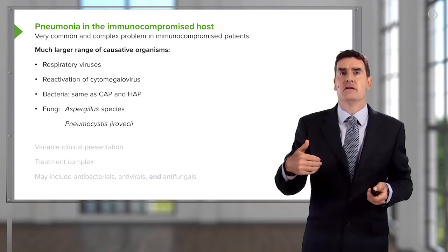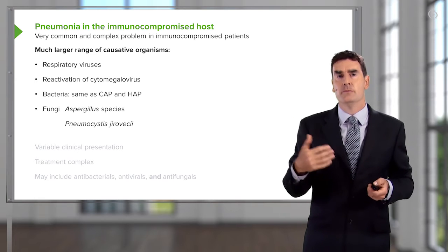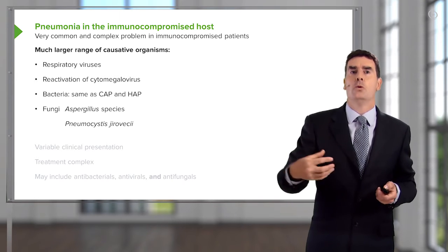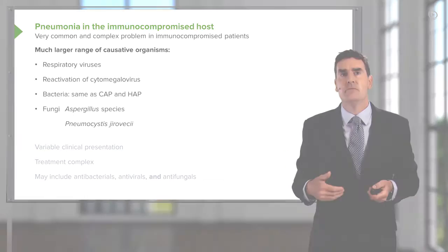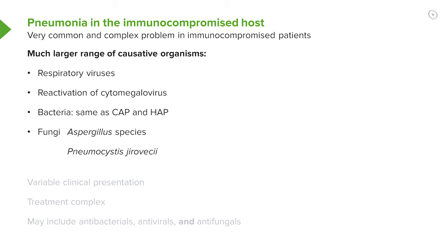The decision about treatment options is much more complex than in community-acquired pneumonia, because you may need to treat respiratory viruses, cytomegalovirus, organisms causing hospital-acquired pneumonia, and then the fungi — Aspergillus and Pneumocystis — which unfortunately require very different treatments. It's a very complex situation requiring careful clinical assessment to ensure the right medication is given. Often these patients will end up on antibacterials, antivirals, and antifungal agents because it's not quite clear what's going on.